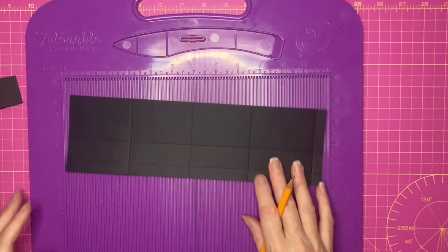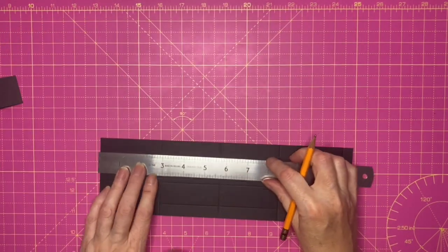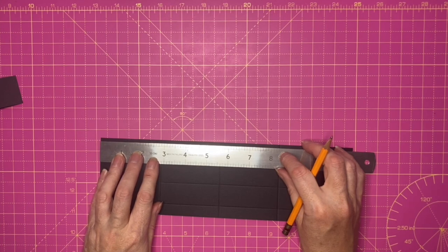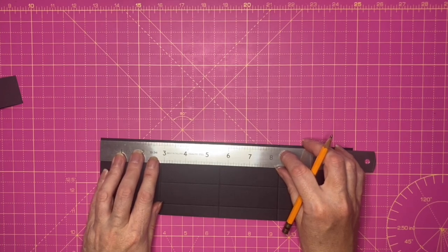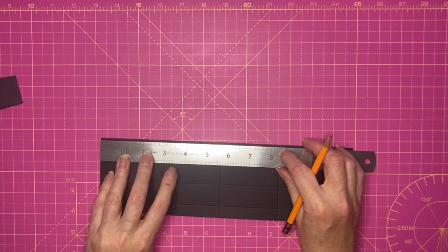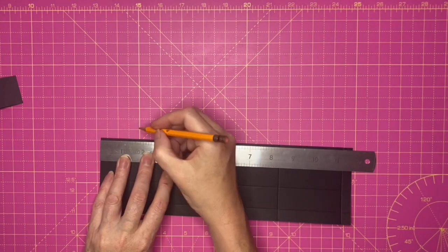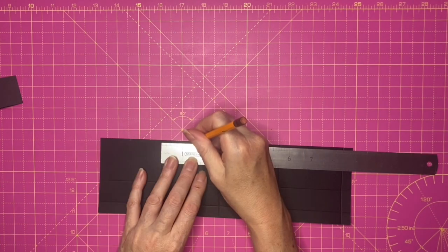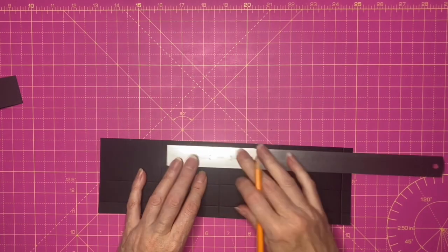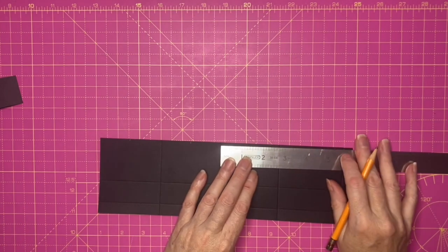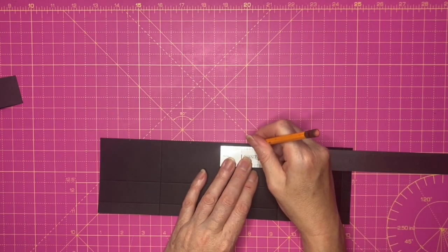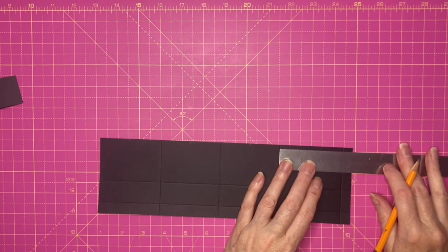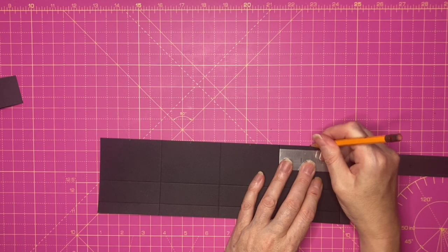I'm now going to use my ruler and I'm going to make a pencil mark along the top edge halfway in each of these tabs, so my first mark I will do at one and three eighths. Again one and three eighths, lining up my ruler with the edge and making a pencil mark at one and three eighths.